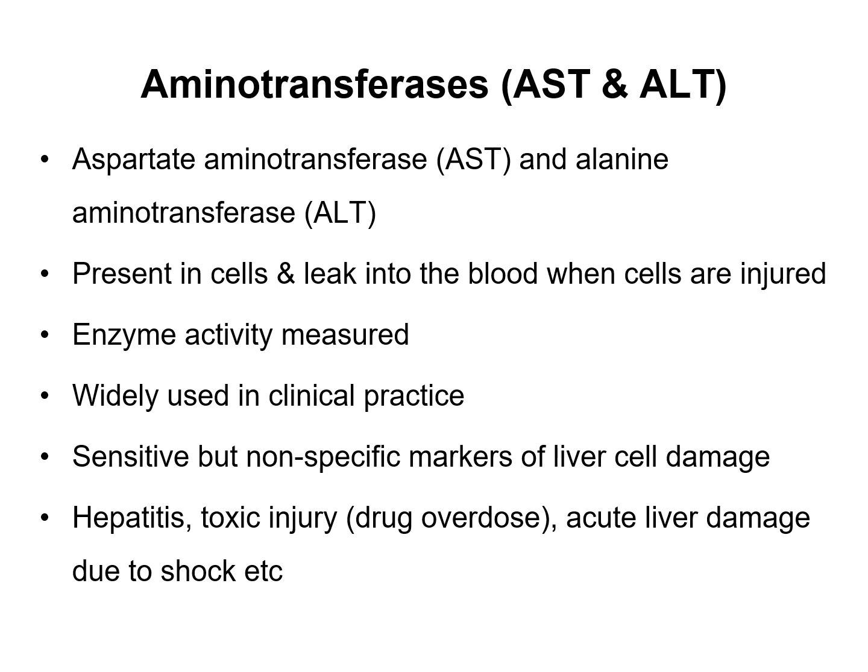Two key enzymes in liver function tests are AST and ALT — aspartate aminotransferase and alanine aminotransferase. Both are present in cells and leak into the blood when cells are injured; their enzyme activity can be measured and is widely used in clinical practice. They are sensitive but non-specific markers of liver cell damage, and are usually elevated in hepatitis, toxic injury due to drug overdose such as paracetamol poisoning, and acute liver damage due to shock.